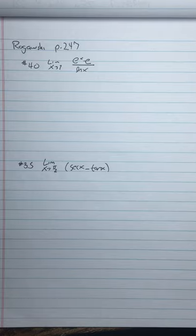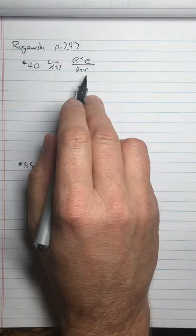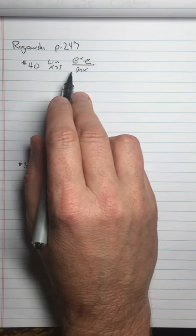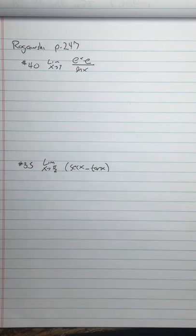So just some more examples of L'Hôpital's rule and some traps to watch out for. Here's a pretty straightforward one. Limit x approaches 1 of e to the x minus e over ln x.